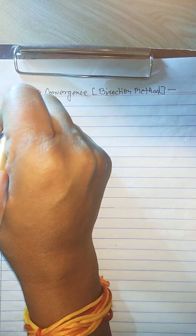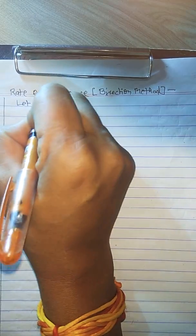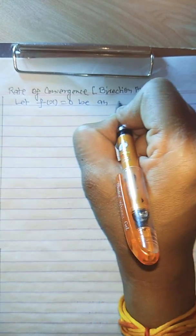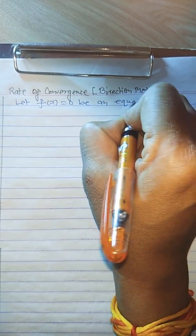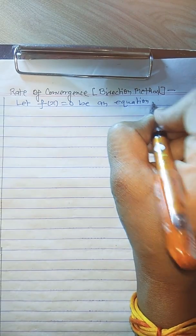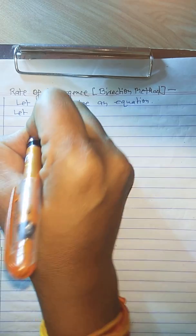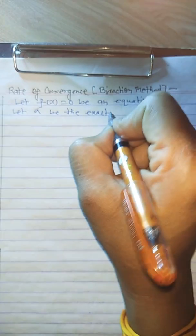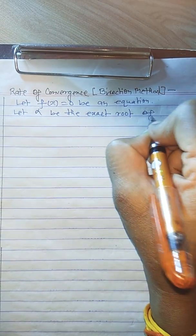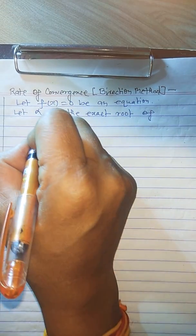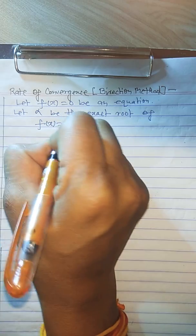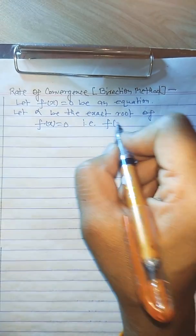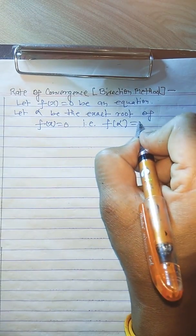Let us assume that f(x) = 0 be an algebraic or transcendental equation, and suppose that alpha be the exact root of that given equation f(x) = 0. That is, if alpha be the exact root, definitely the value of f(alpha) must be equal to 0.